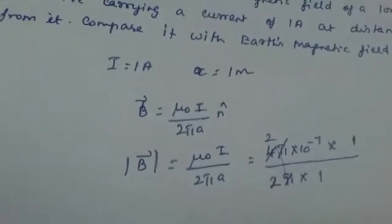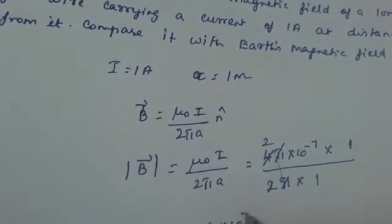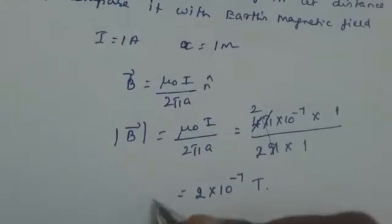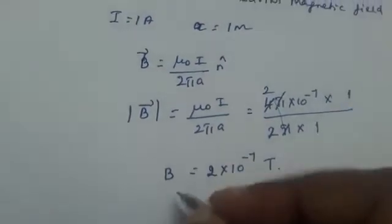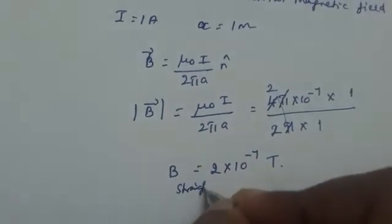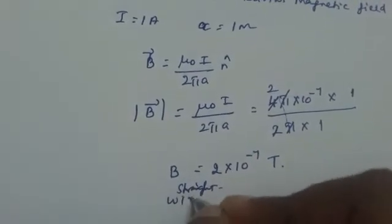If you cancel these two, π and π will get cancelled. What you get here is 2×10⁻⁷ tesla. This is the value of B we are getting. This is for a straight wire.